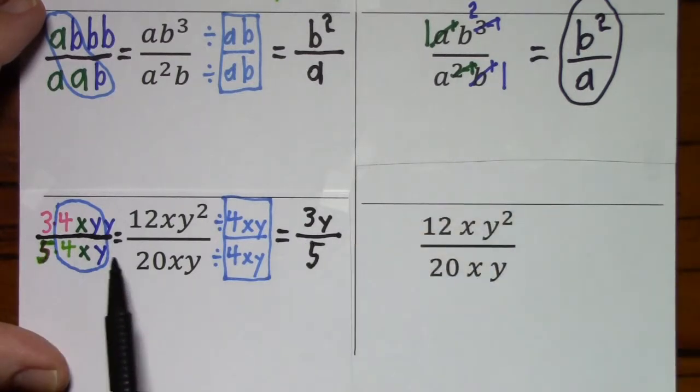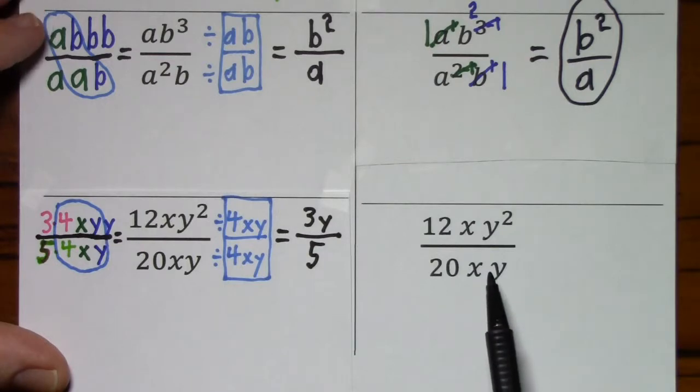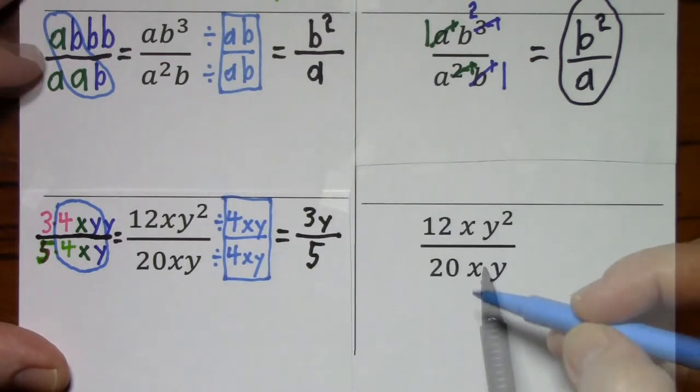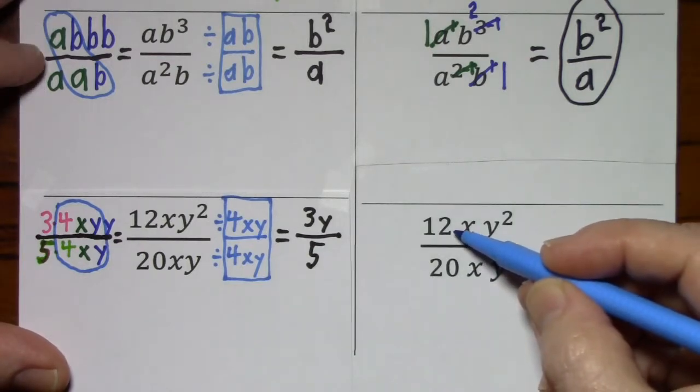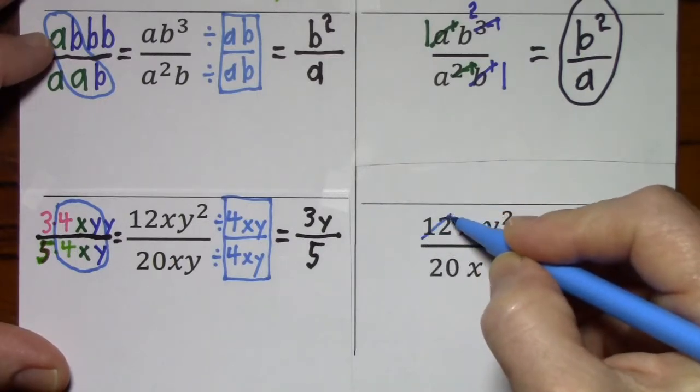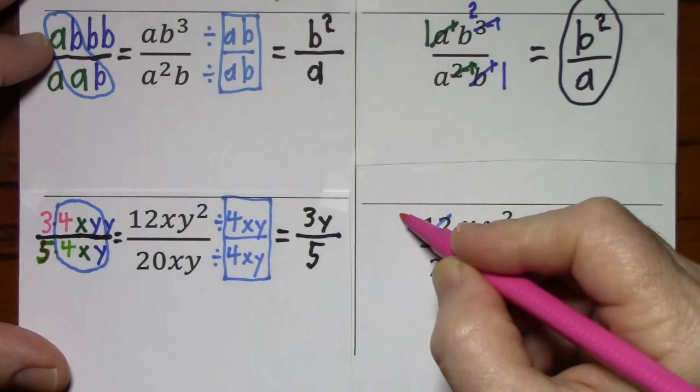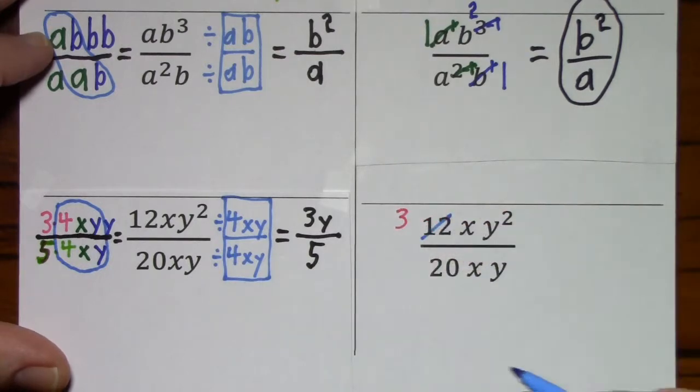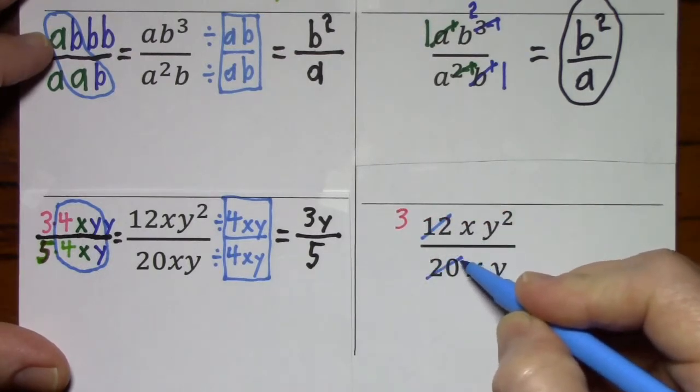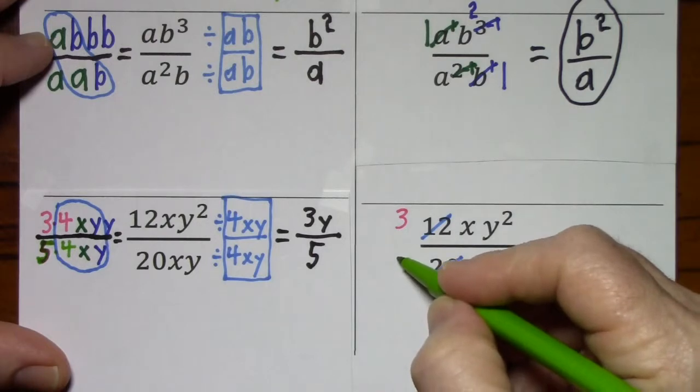Now, writing out a factored form is a lot of work. I think you can do it with less writing. Think of a number that divides both 12 and 20: 4. Divide by 4, you're left with 3. Divide by 4, you're left with 5.